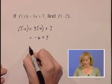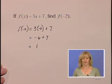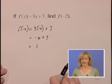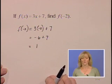Negative 6 plus 7 gives us the value 1. So f of x is equal to 3x plus 7 evaluated at negative 2 gives us the value 1.